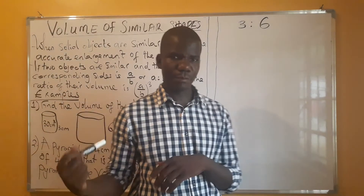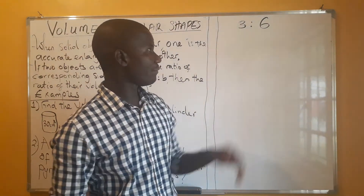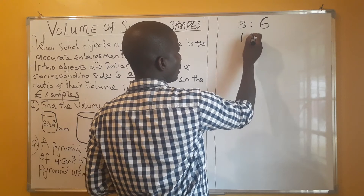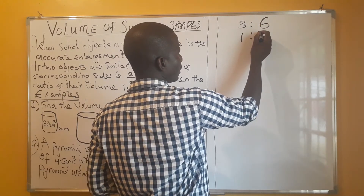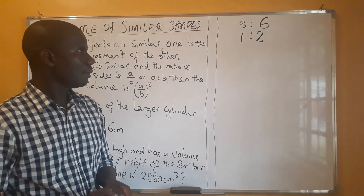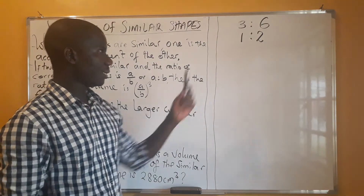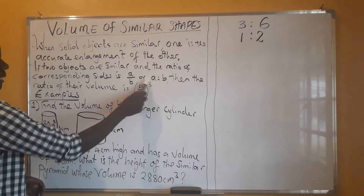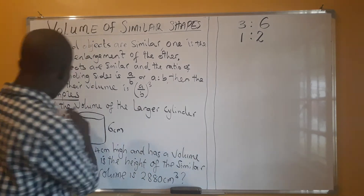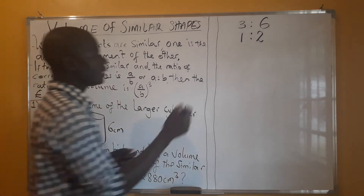As I advised in the previous lesson, if you have ratios like these you should simplify them. So 3 to 6 simplifies to 1 to 2 — we have not changed anything. Now we want to find the ratio of volume. Volume is given in centimeters cubed, so we need to convert these ratios into ratios of volume.